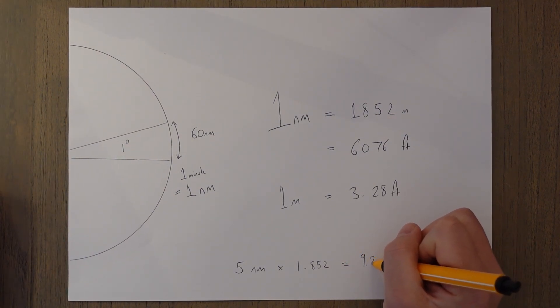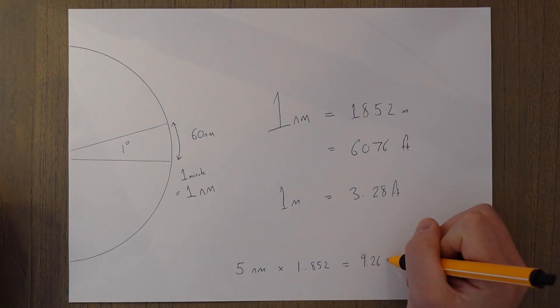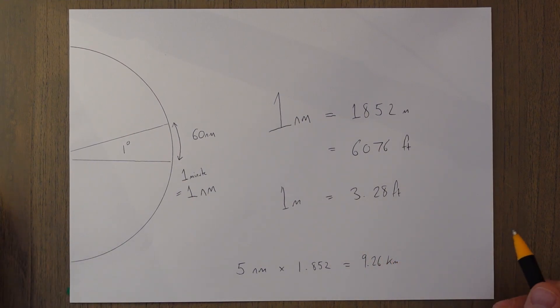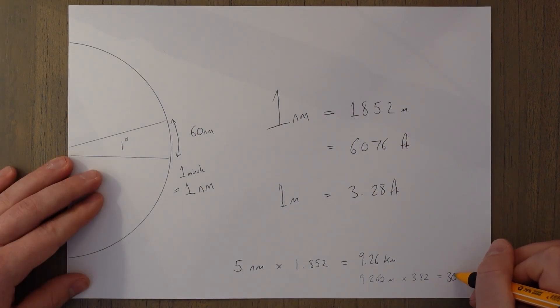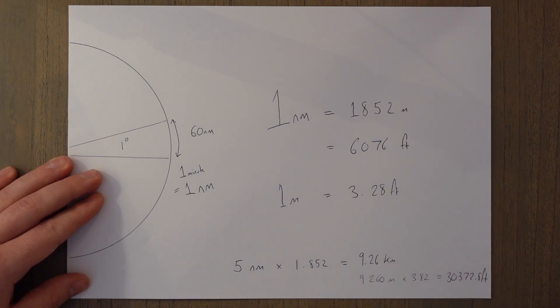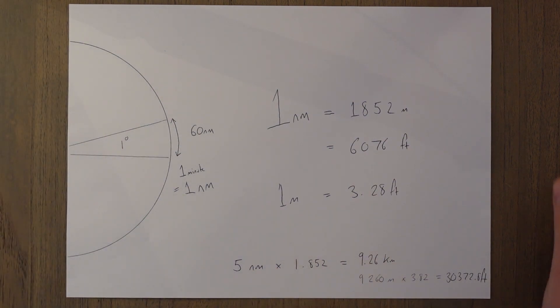And then if we want to find the value in feet we would just use this conversion here, and it would be 9,260 meters times by 3.28 to get it into feet, which gives us 30,372.8 feet. And if we were then to divide this number by 6076 feet, we should get back to five nautical miles, so let's just do that.